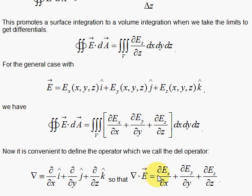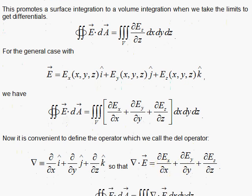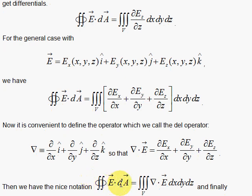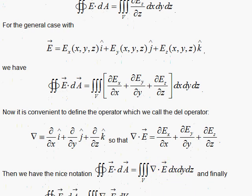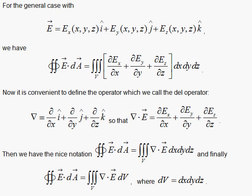So, del dot E is equal to the partial sum of the partial derivatives of each component with respect to its component variable. So, once we have that, we can write the surface integral as a volume integral with this notation, del dot E. And, that is the divergence theorem.